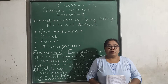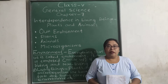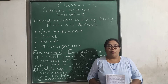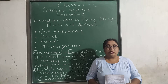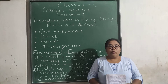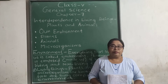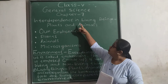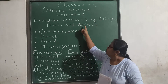Hello students of class 5. I hope you all are doing good and I hope you all have used the previous videos and have the notes from the previous chapter. Today we will be learning general science chapter 7 about interdependence in living beings — plants and animals.